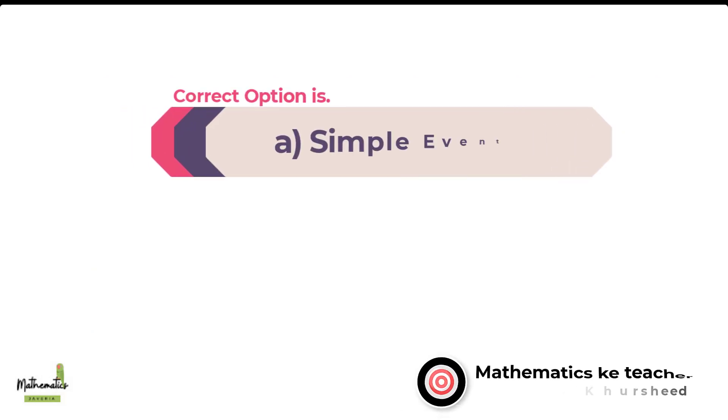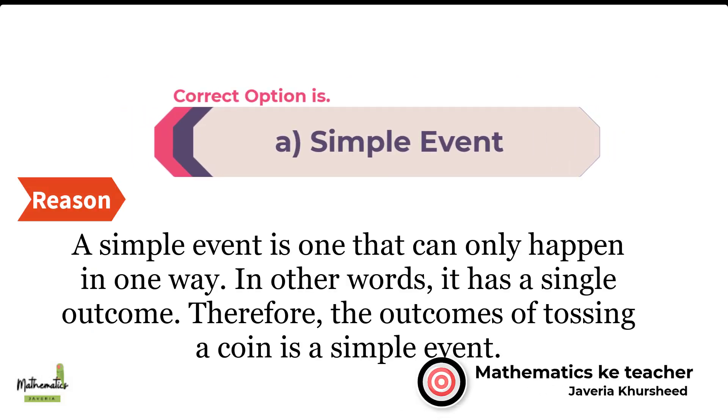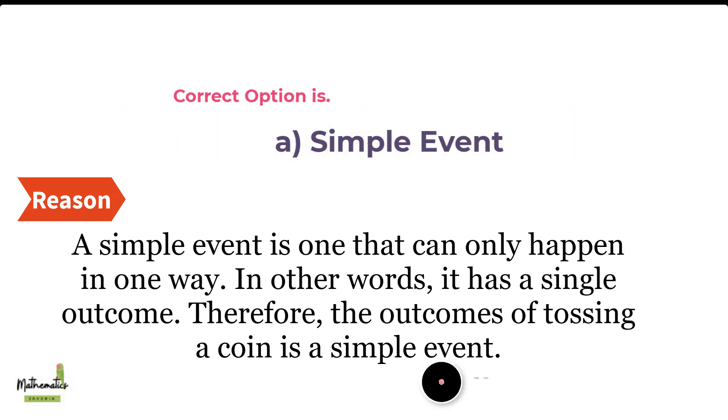Correct option is A. Simple event. Since a simple event is one that can only happen in one way, in other words, it has a single outcome. Therefore, the outcomes of tossing a coin is a simple event.